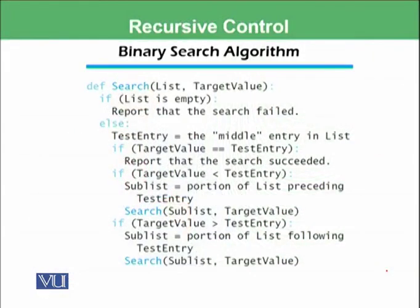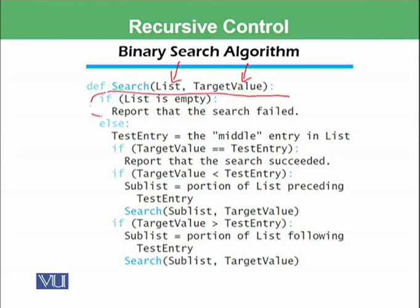Remember this function — initially the whole list and the target value are sent to the function, and then we check if the list is empty. This was the statement we did not execute in the previous module, and we will be doing it today. Then we select the middle entry from the list, put it in the test entry, and see if the test entry is equal to the target value. If so, we have found the required name.